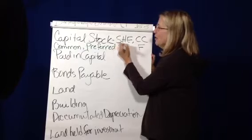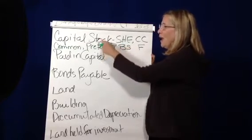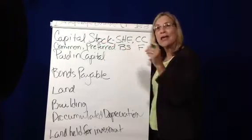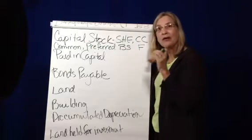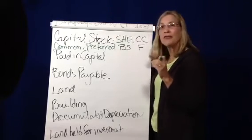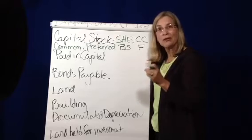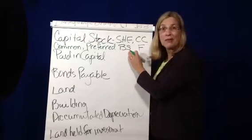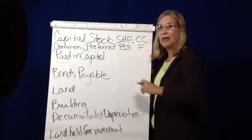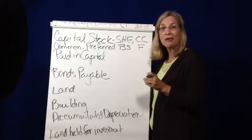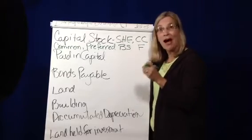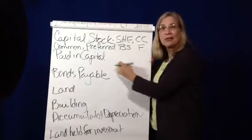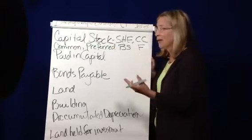Capital stock is found on the balance sheet. If a company prepares a statement of stockholders' equity, you would also find it there. So it can definitely be on the balance sheet and, if the company does a statement of stockholders' equity, on that as well. Paid-in capital is kind of a sister account to capital stock.